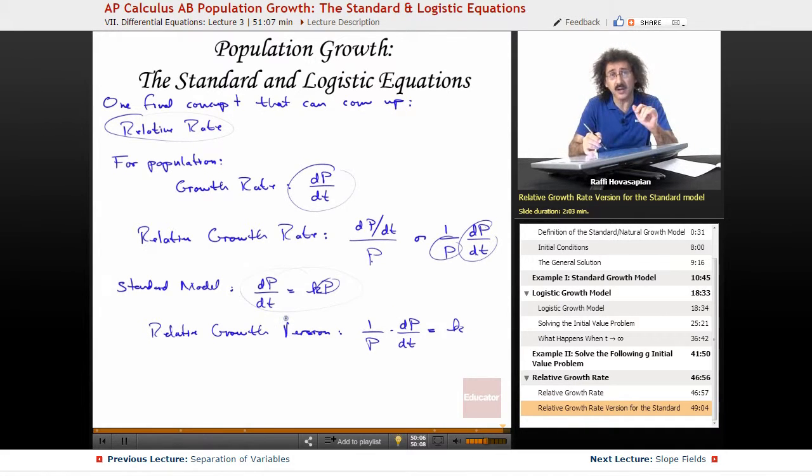So the solution that we got for the standard model is going to be the same solution here. We're still going to separate variables and integrate. The only difference is it's going to be worded differently. Here they're going to say the rate of change of a population is directly proportional to the population. Here they're going to say the relative rate of change of the population is constant.